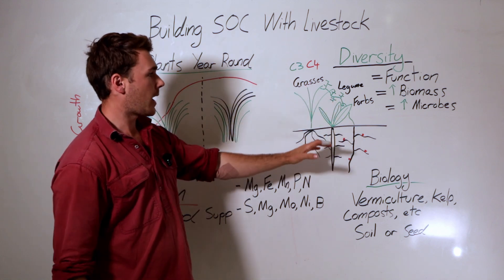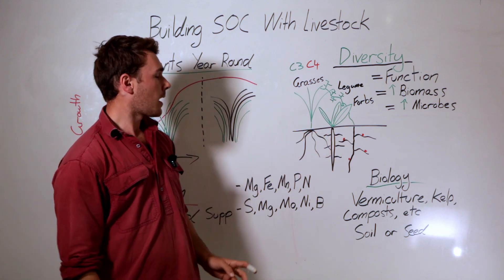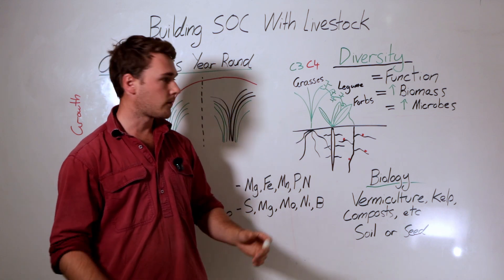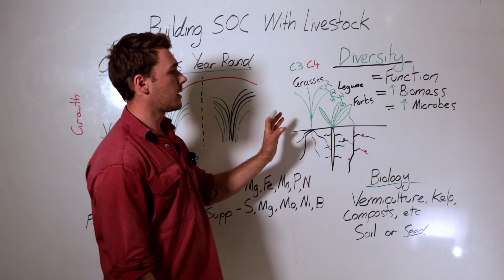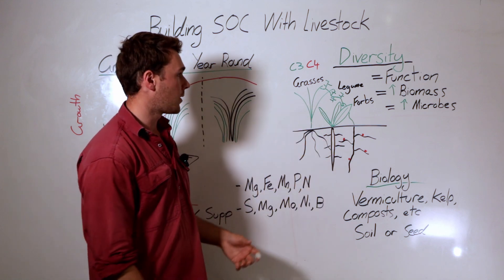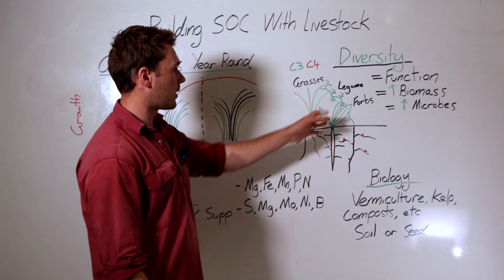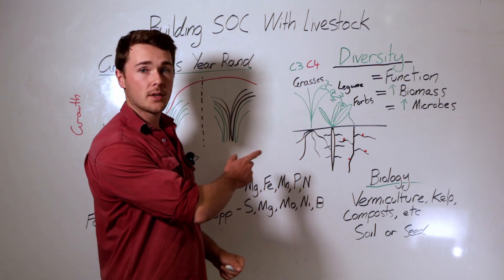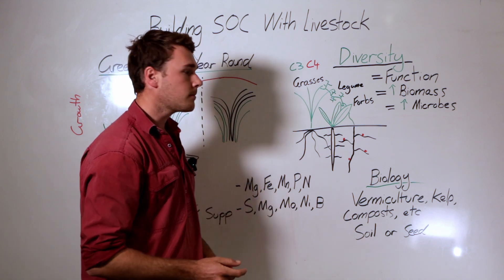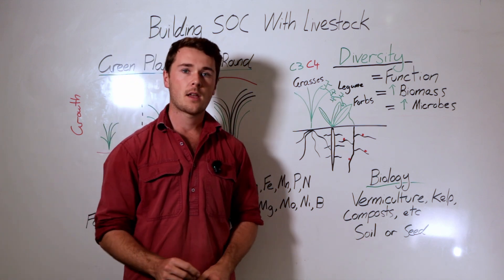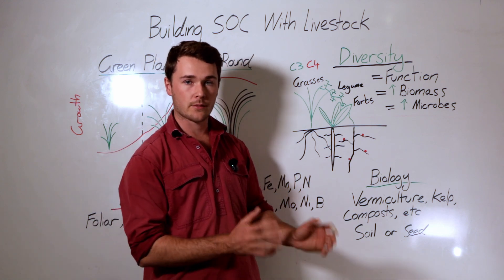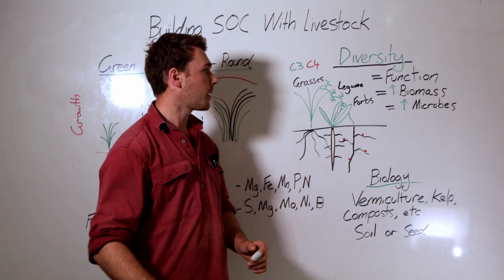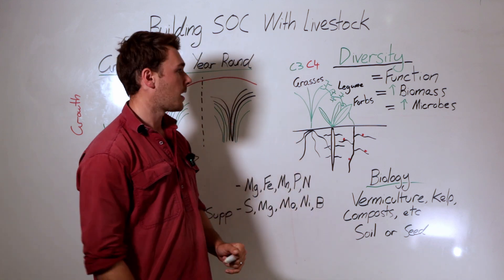Having C3 and C4 grasses ensures green leaf all year round. I would actually go even further — more forbs, more legumes, more grasses will overall increase biomass. If you're interested in how diversity impacts production systems, we have a video comparing monoculture cover crops to multi-species cover crops and why multi-species is better, available on our YouTube channel.